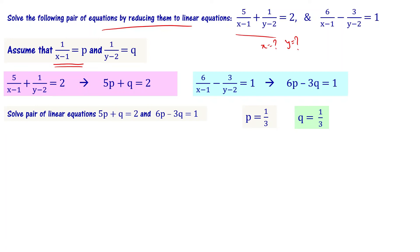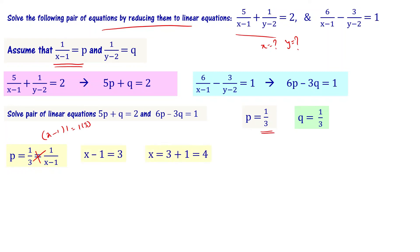Since p equal to 1 by 3 and p equal to 1 by (x minus 1), by cross multiplication: x minus 1 equal to 3, so x equal to 3 plus 1, that is equal to 4. The value of x is 4.